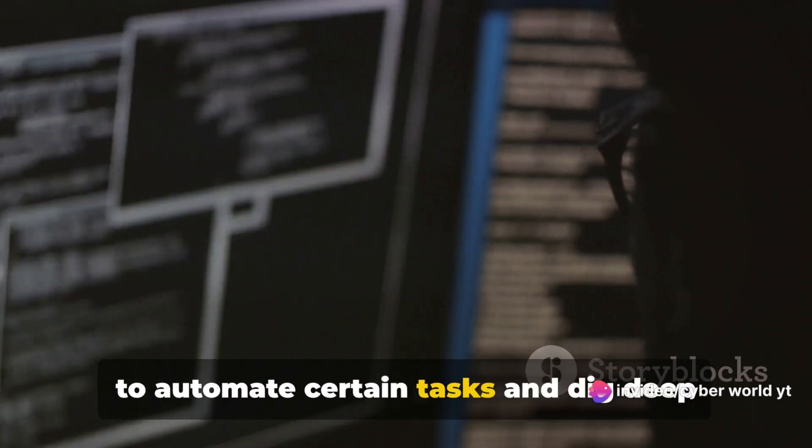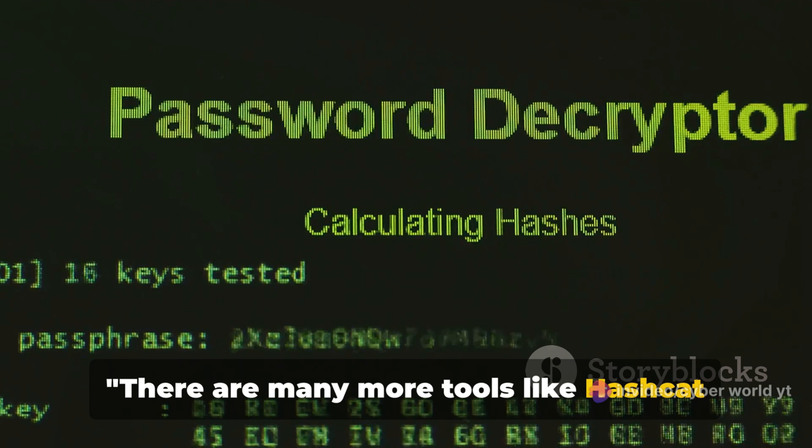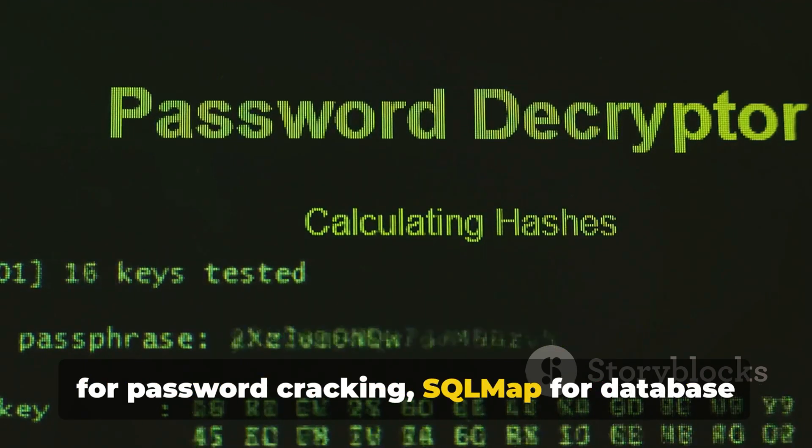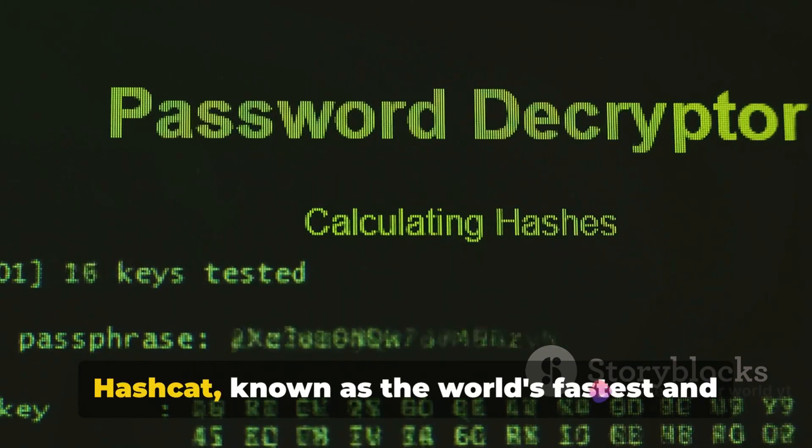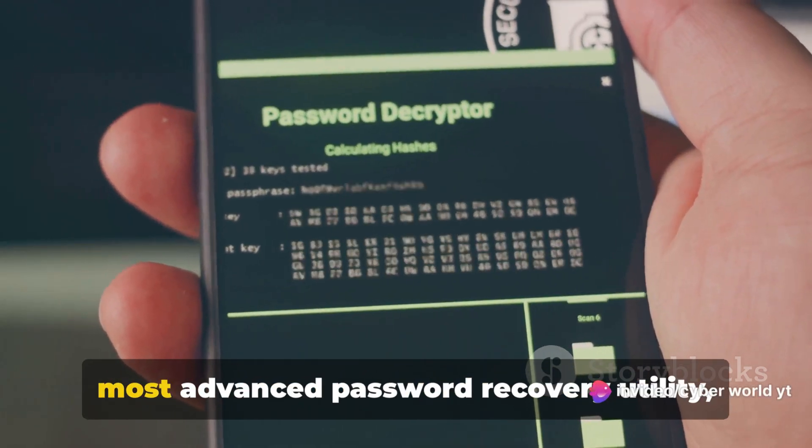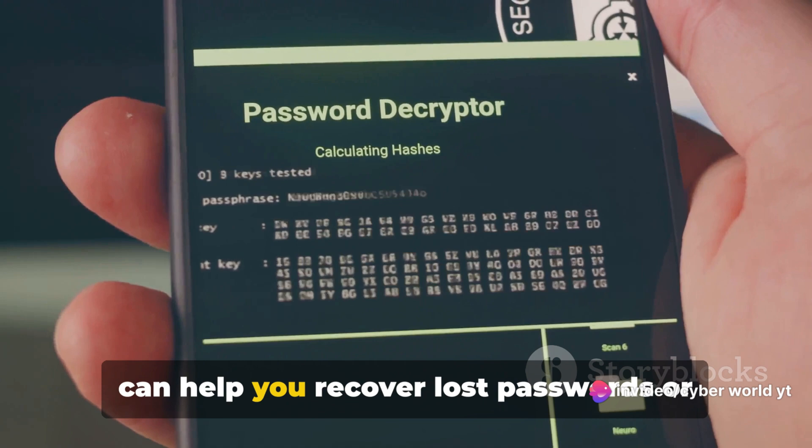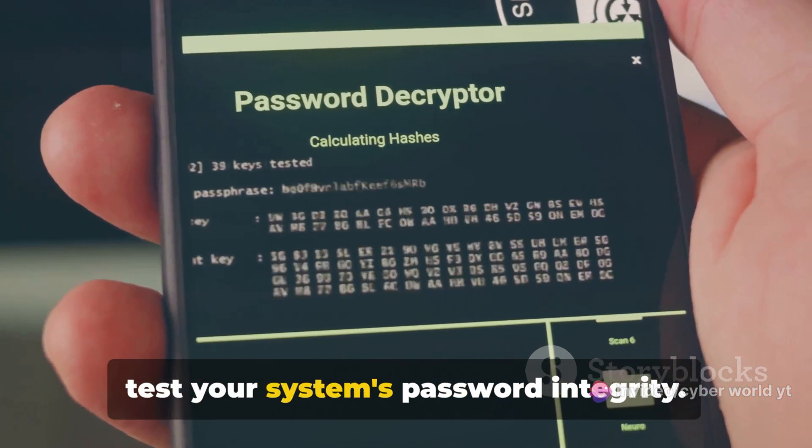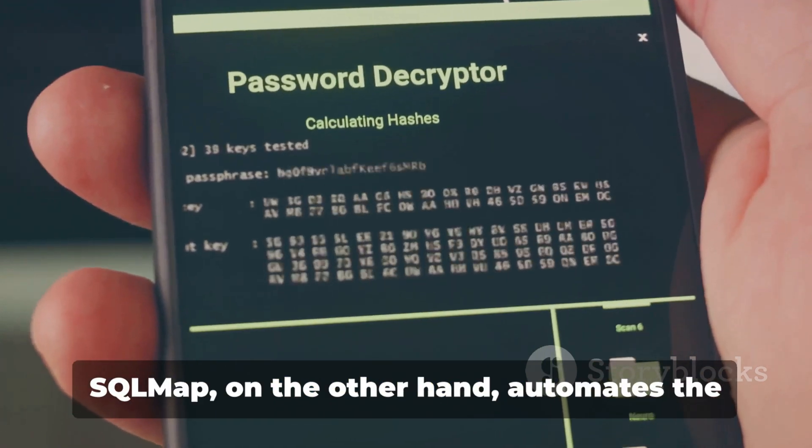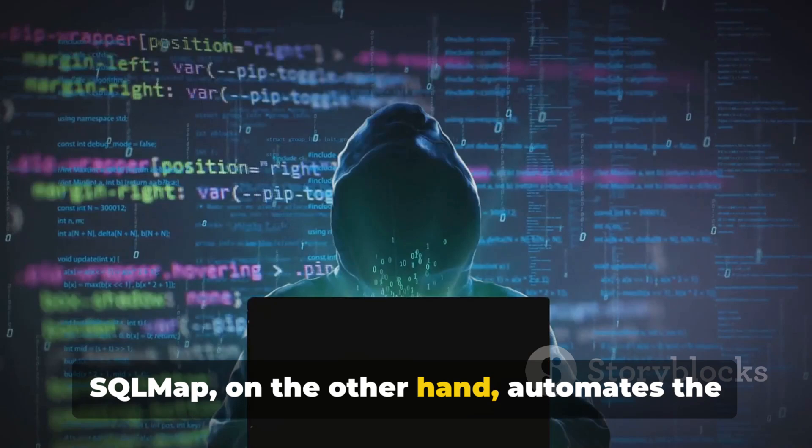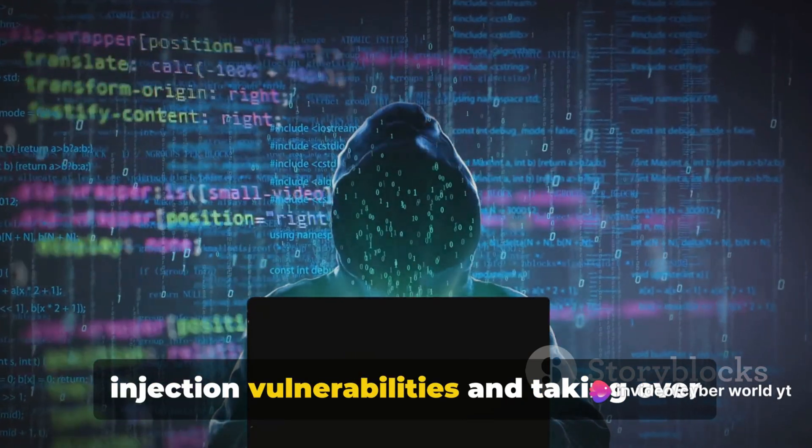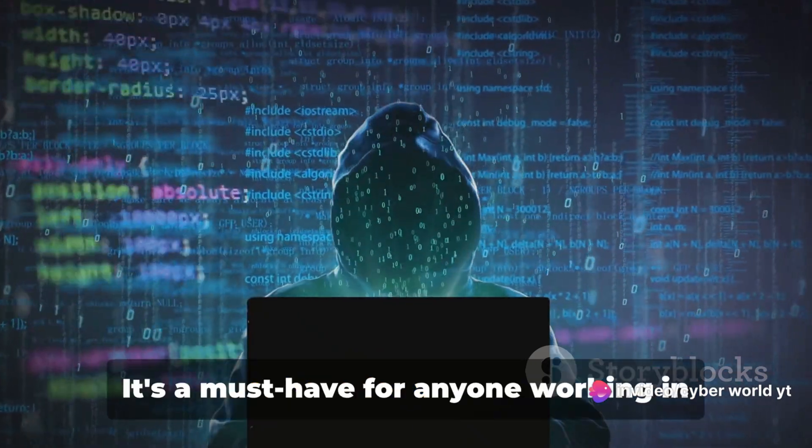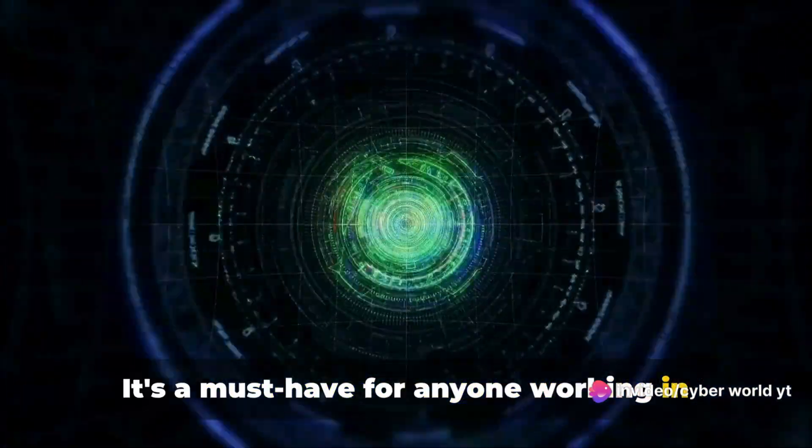There are many more tools like Hashcat for password cracking, SQLMap for database vulnerability scanning, and Nessus for vulnerability scanning. Hashcat, known as the world's fastest and most advanced password recovery utility, can help you recover lost passwords or test your system's password integrity. SQLMap, on the other hand, automates the process of detecting and exploiting SQL injection vulnerabilities and taking over database servers. It's a must-have for anyone working in database security.